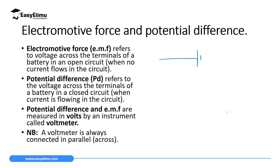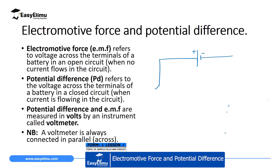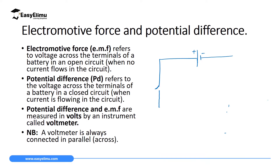In a simple circuit, we have a battery drawn with a long line representing the positive terminal and a short line representing the negative terminal. Then we have a switch — and in this case the switch is open — and then we have a bulb, which is drawn as a circle with a cross in it, with lines making 90-degree corners. When we have a simple circuit like this one, the switch is open and there is no current flowing.